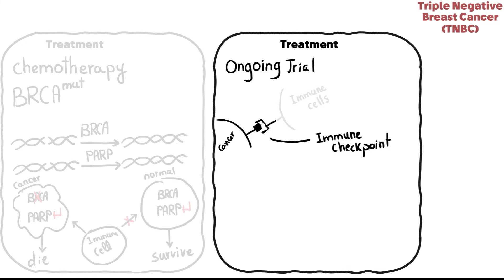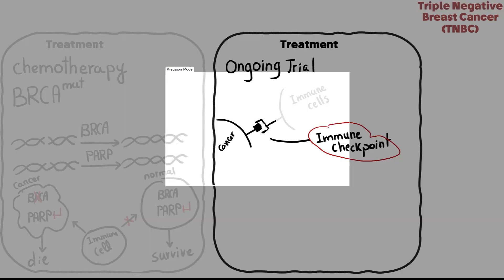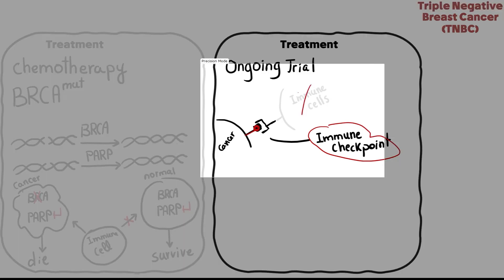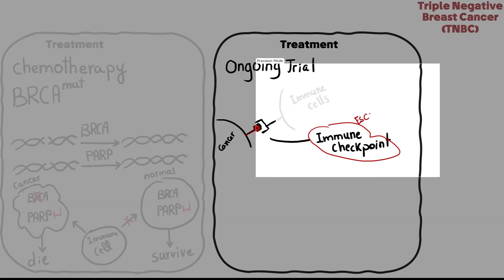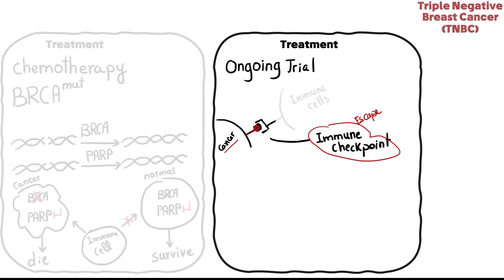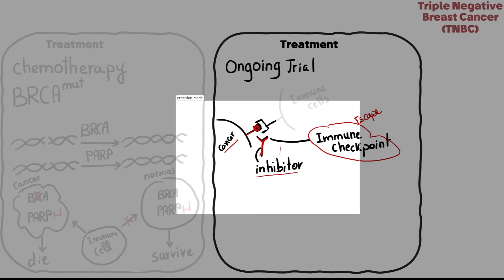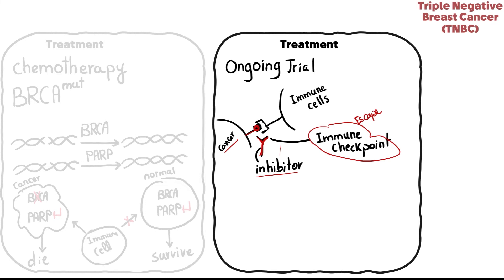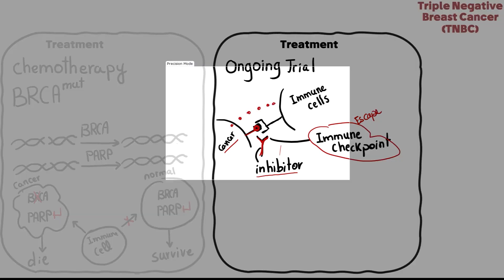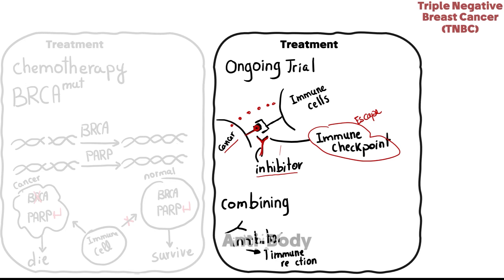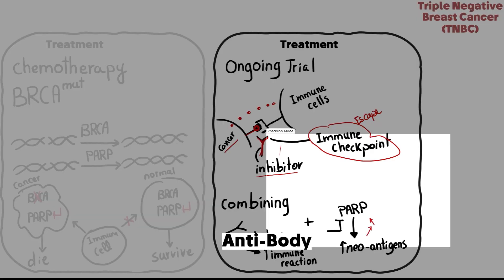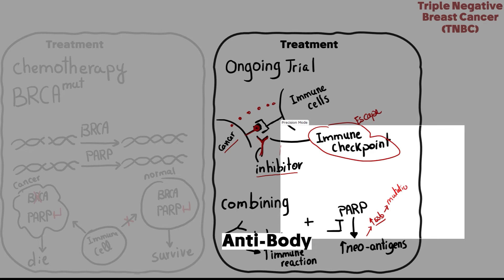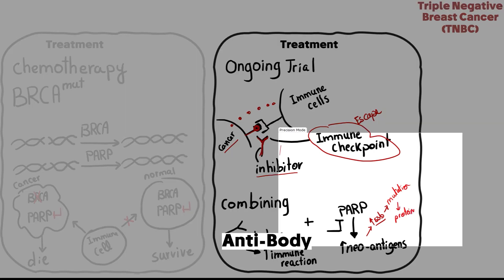Another ongoing treatment trial is based on immune checkpoint blockade. Immune checkpoints are expressed on the surface of cancer cells and inhibit immune cell function, acting as an escape mechanism abused by cancer. An antibody that inhibits this interaction reactivates immune cells, leading to cancer cell destruction. The ongoing trial combines immune checkpoint inhibitors with PARP inhibitors, which increase neoantigens by causing single-stranded DNA breaks, leading to increased mutations and mutated proteins processed by MHC to be presented as neoantigens that trigger an immune response.